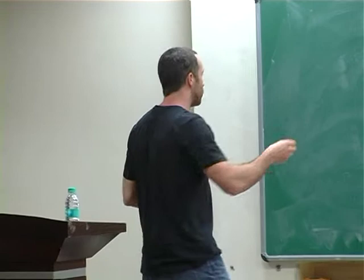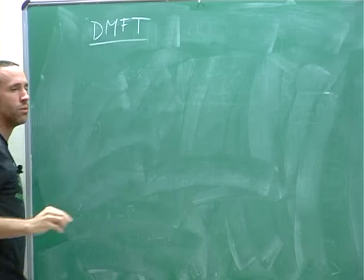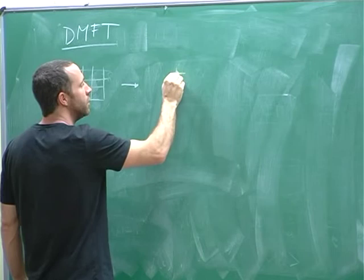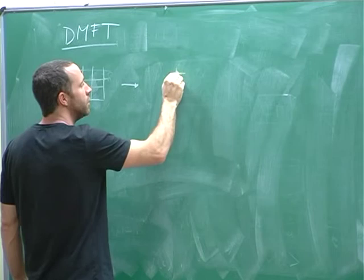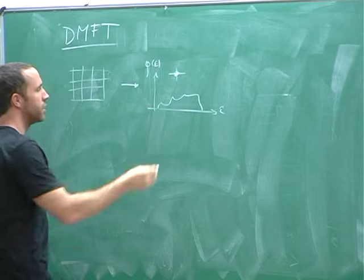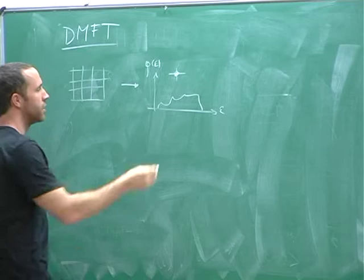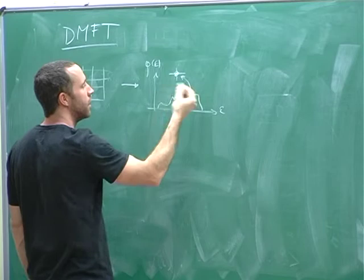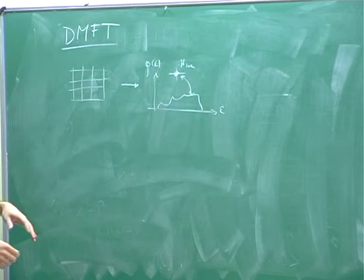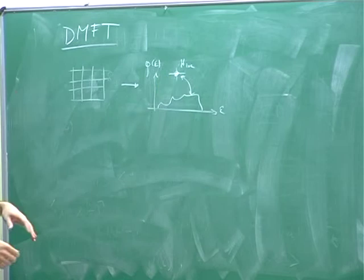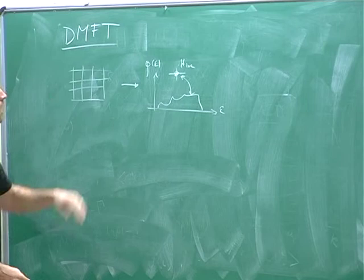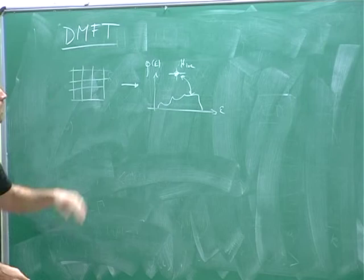So DMFT — I'm not reintroducing what Antoine already said, but very quickly: the idea is we start from a lattice model and map it onto a problem of a single impurity or embedded atom, which talks to a conduction bath of a given structure. These two things communicate through a hopping or hybridization, and there's a local Hamiltonian describing the local physics. For the Hubbard model, the model it maps onto is the Anderson impurity model.